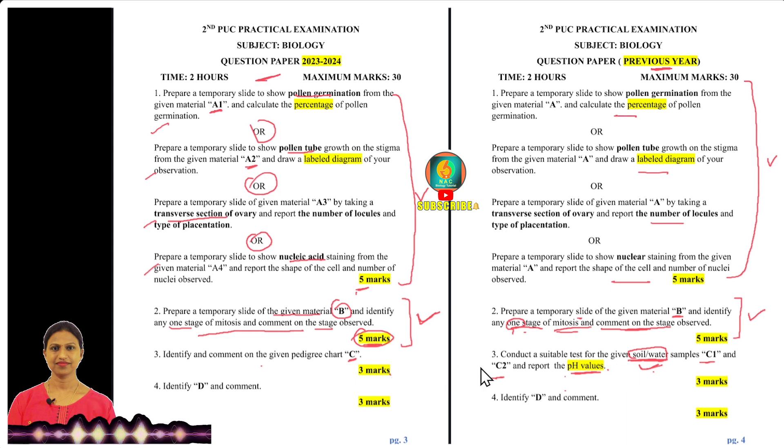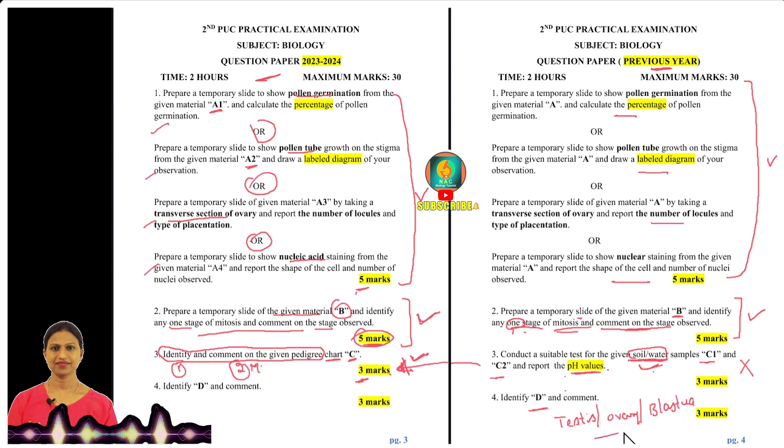But this year the C experiment will change. What do you need to do? Identify and comment on the given pedigree chart. Identification is one mark. It could be autosomal dominant, autosomal recessive, sex-linked dominant, or sex-linked recessive. If we identify that chart correctly, we can comment for the other three marks. This is the D experiment, TS of testis, TS of ovary, TS of blastula, in slide and model.